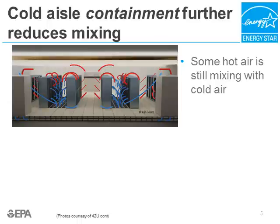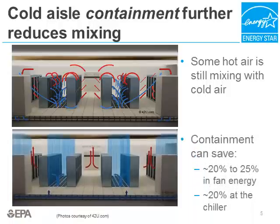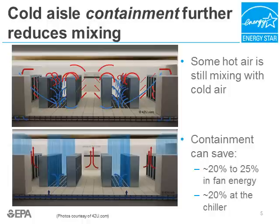Arranging your server racks into cold aisles and hot aisles isn't a perfect solution. It's still possible to see some hot air mixing with cold air over the tops of server racks — we call this bypass or recirculation. It can be minimized with a technique called containment. In its simplest form, containment is simply a clear vinyl shower curtain that hangs from the ceiling and prevents hot and cold air above the server racks from mixing. This concept can be taken one step further with rigid containment, which replaces those curtains with hard plexiglass panels. Containment leads to reduced fan speeds, which saves energy, and means cool air is delivered to the servers more efficiently — so less cooling overall is needed, and you'll see savings at the AC unit or chiller as well.